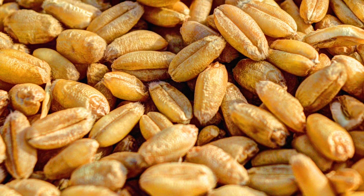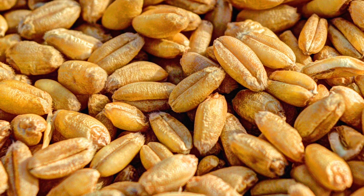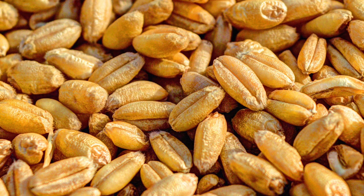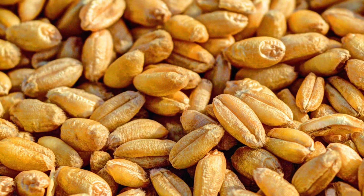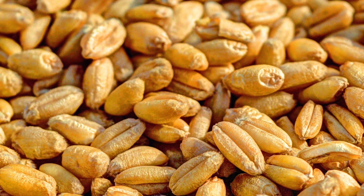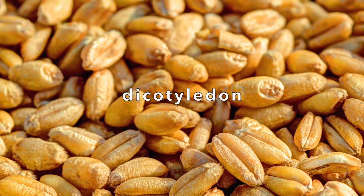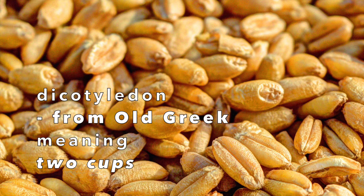The seeds that open easily, like the pinto bean seed we looked at, do that because there are two cotyledons and two can be easily separated. That type of seed is called a dicotyledon. Di comes from the Old Greek word meaning twice or two, so dicotyledon means two cups.